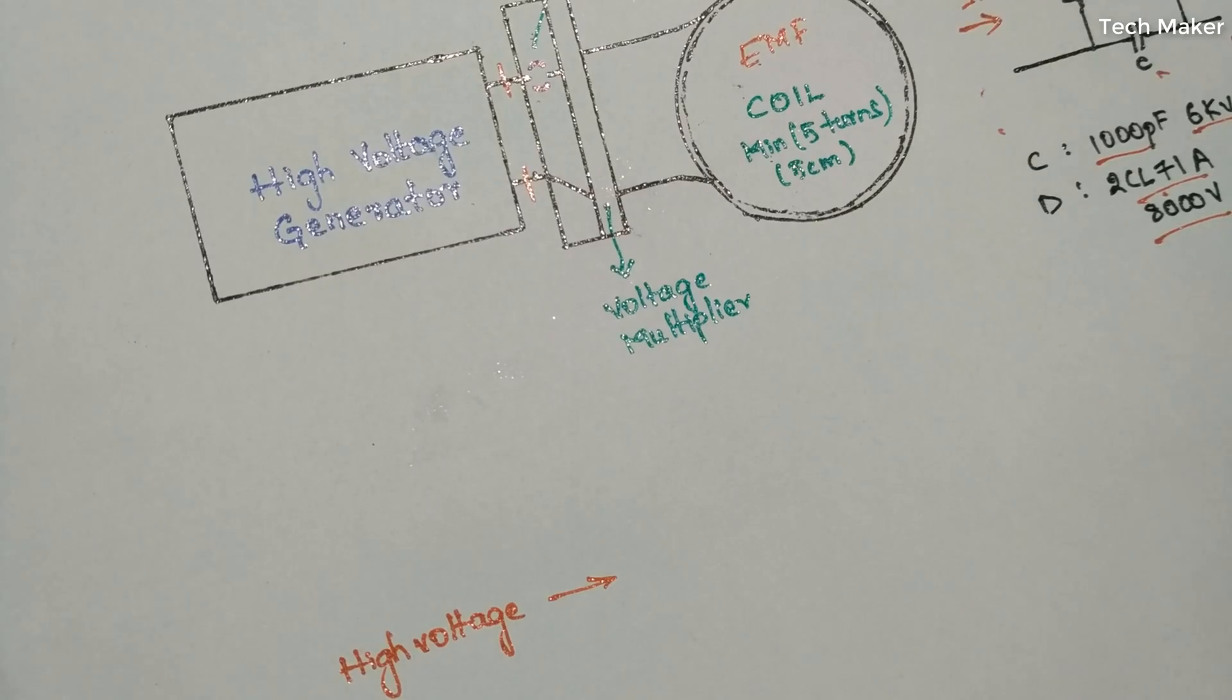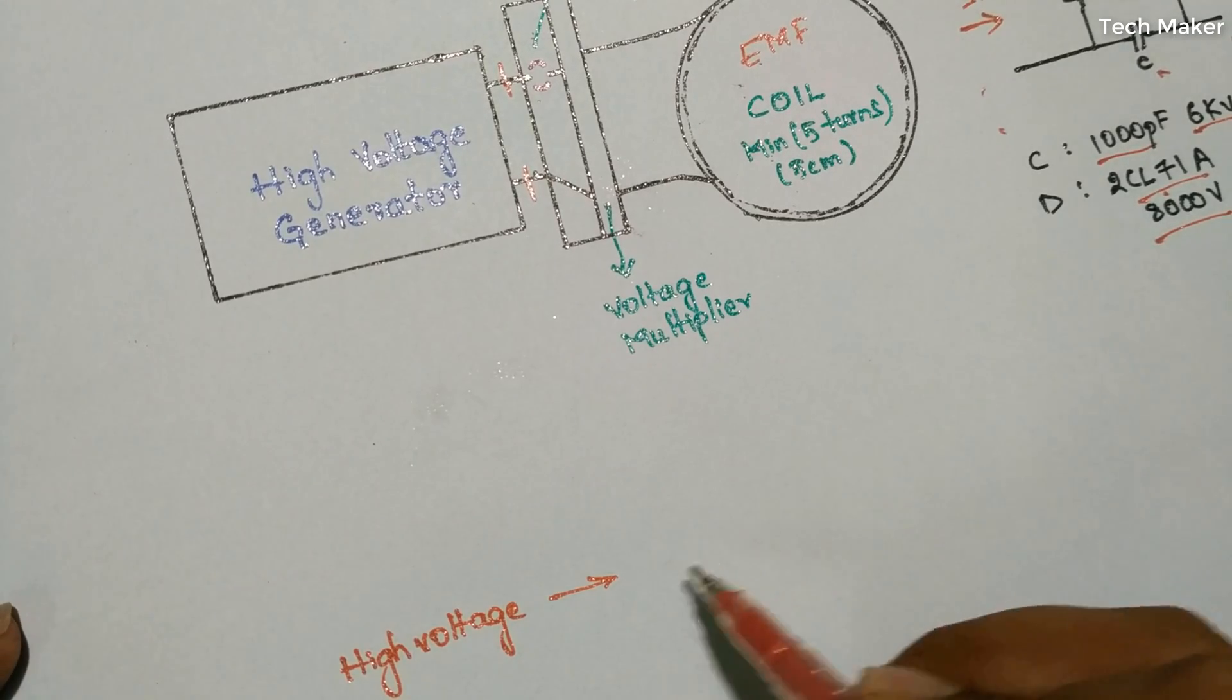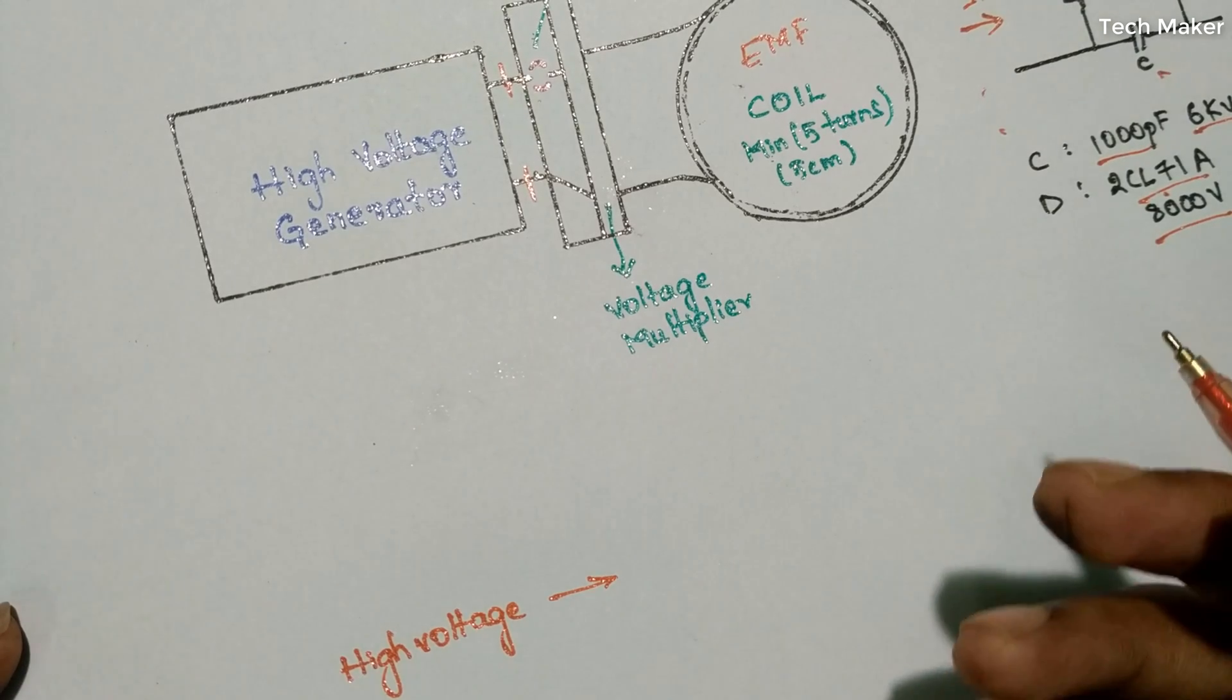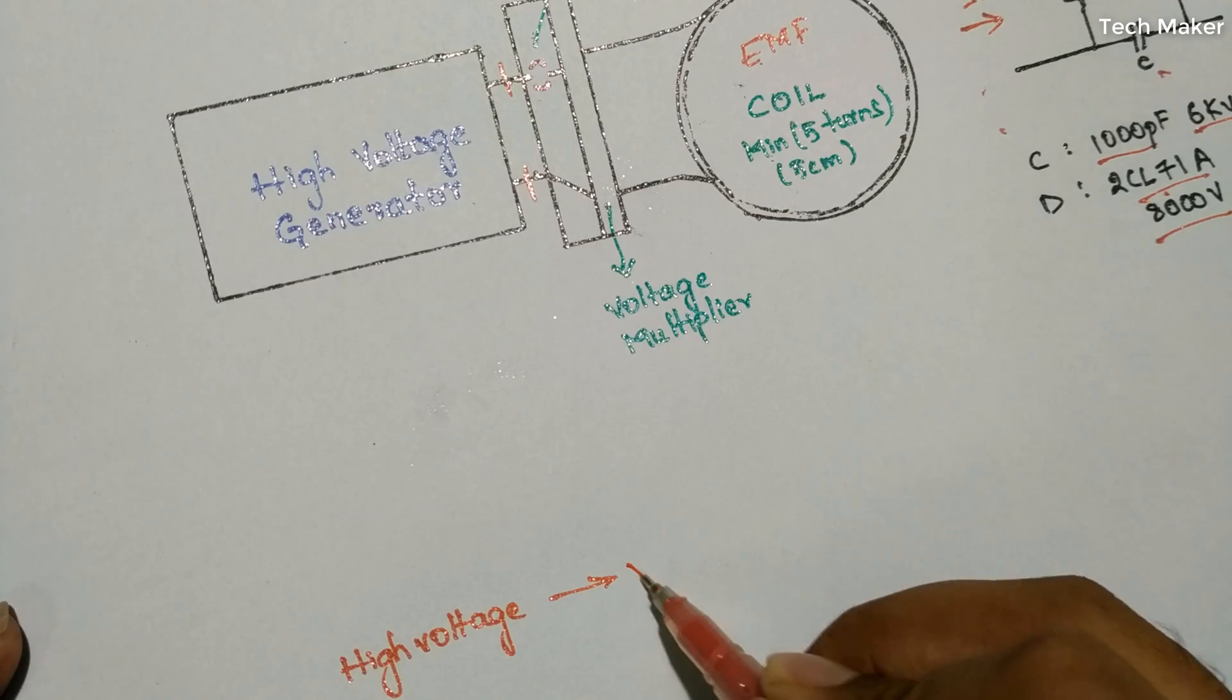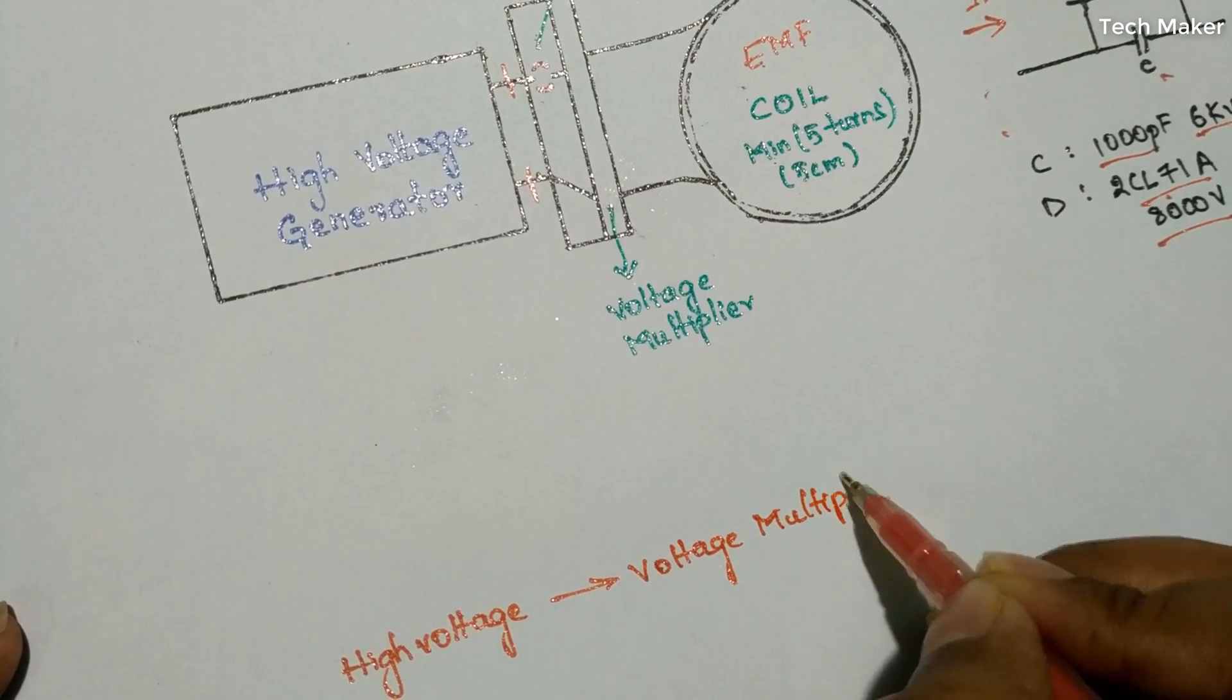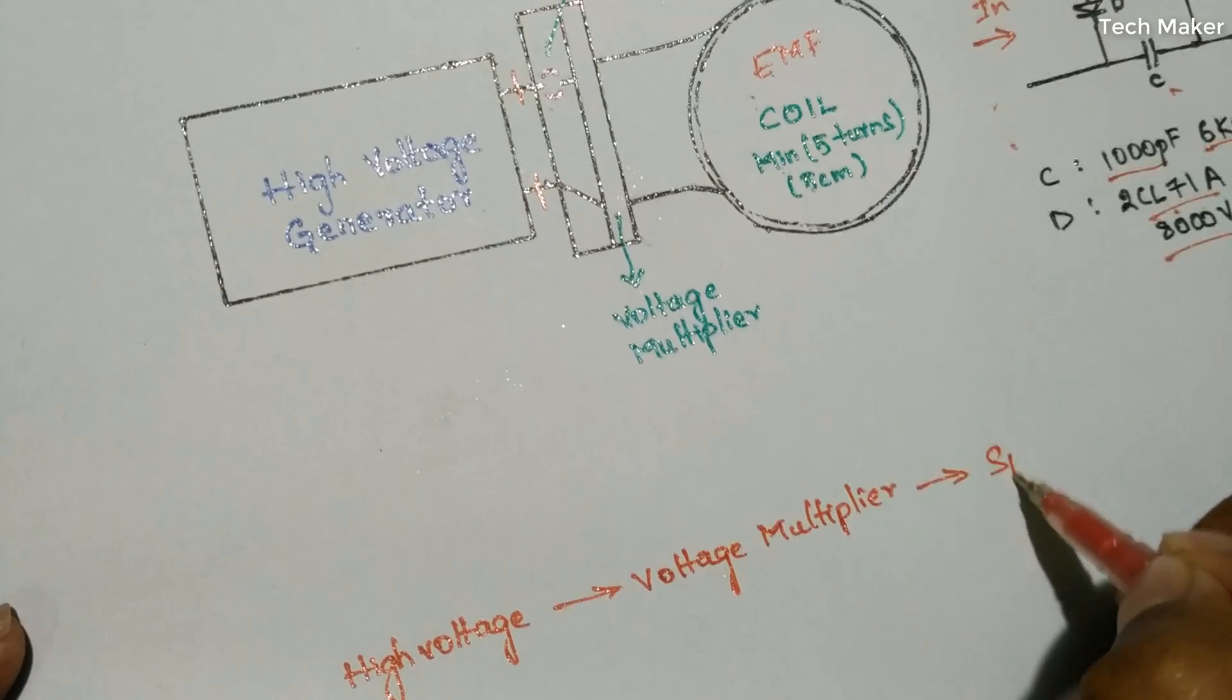This high voltage generator generates the high voltage and then it goes to the spark gap. If you are not getting the spark gap, you need to add the voltage multiplier here, then it goes to the spark gap.